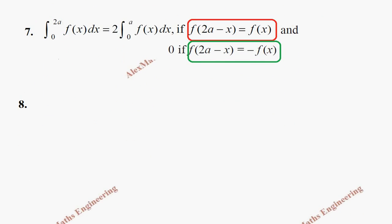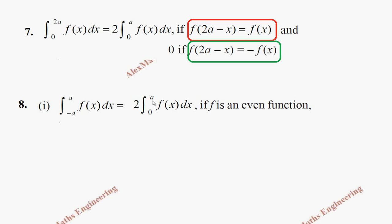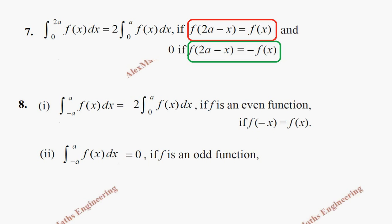Eighth property: for integral from −a to a of f(x) dx — if the function f is even, meaning f(−x) equals f(x), the value is 2 times integral 0 to a of f(x) dx. If the function is odd, meaning f(−x) equals minus f(x), then the integral from −a to a of f(x) dx equals zero.